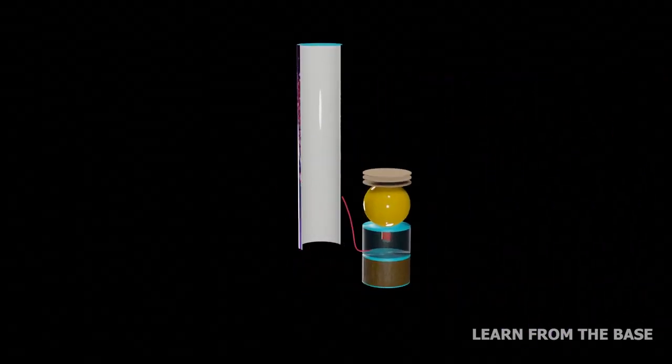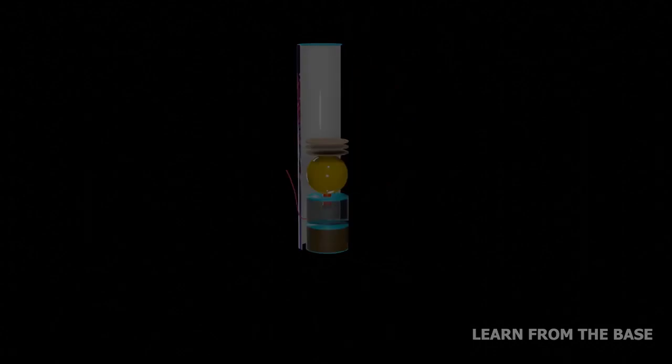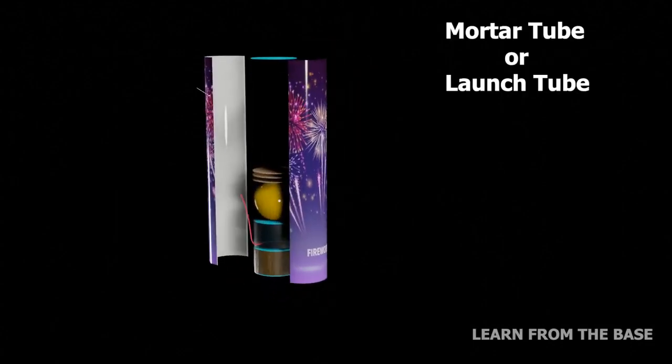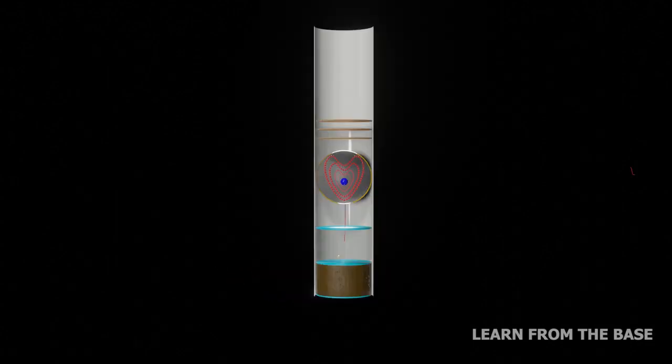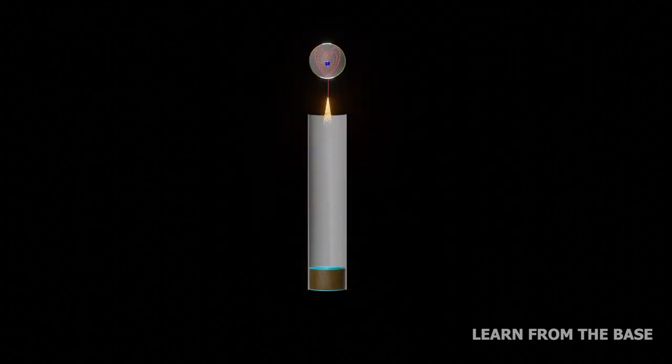Let's explore the working mechanism in a detailed manner. This is the mortar tube. This helps the firework shell to send up into the air at a perfect angle.